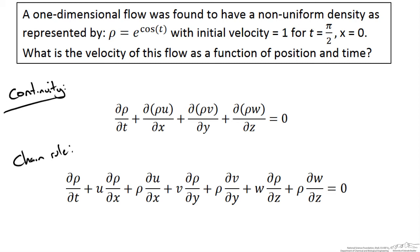What can we cross out now? We know density is a function of time, so we can't get rid of this first term. We are only looking at 1D flow, which means the flow is only in the x direction. So we can get rid of any terms that have v or w, as they represent y or z velocity. So those terms are gone — all equal to zero.